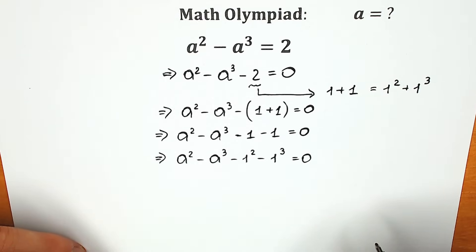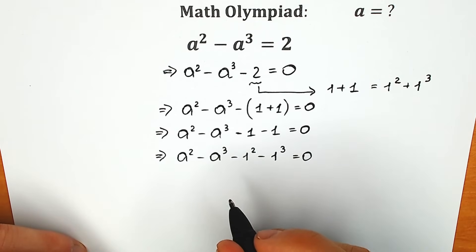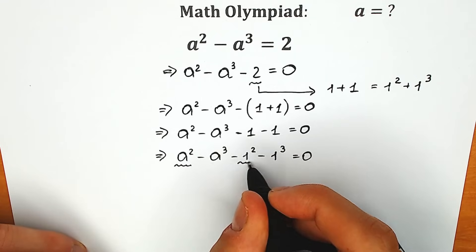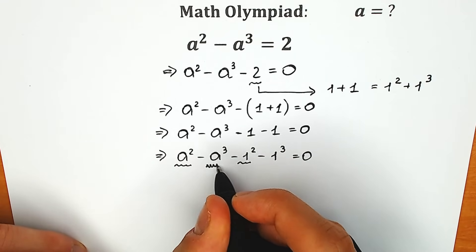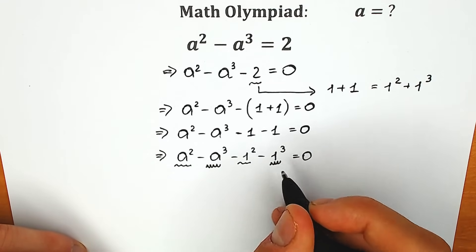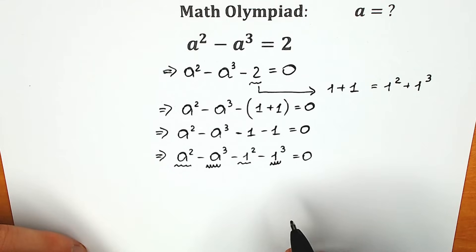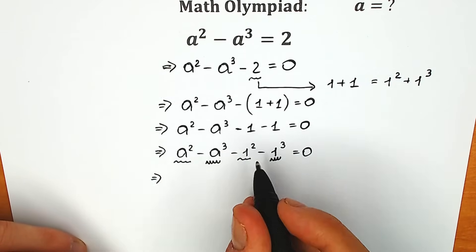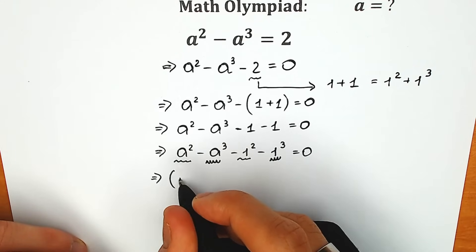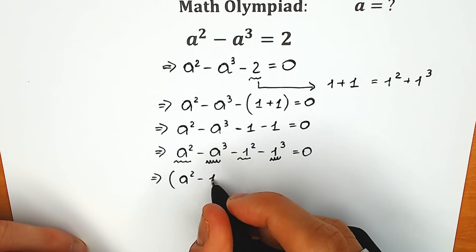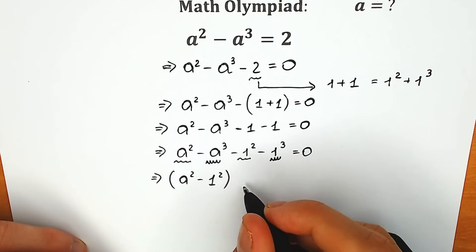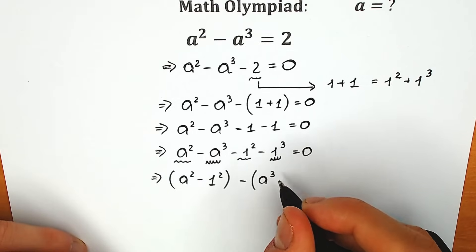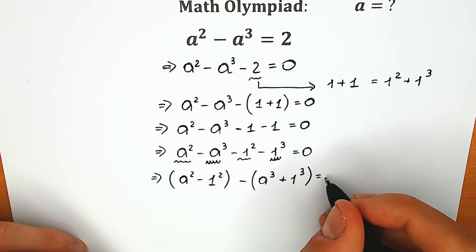Right now we have squares and cubes here. So we can easily group our squares — this a squared and this 1 squared — and we can group this a cubed with this 1 cubed. So we're going to group a squared minus 1 squared in the first parenthesis, and in the second parenthesis we have minus a cubed plus 1 cubed, equal to zero.